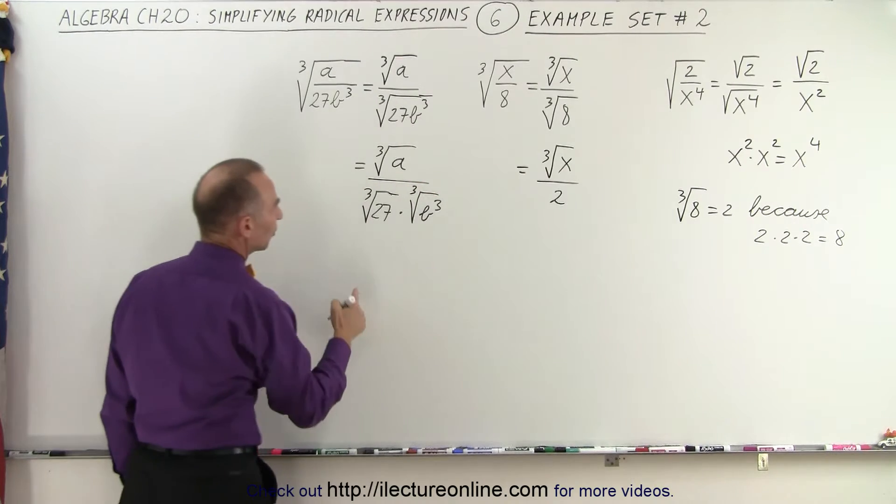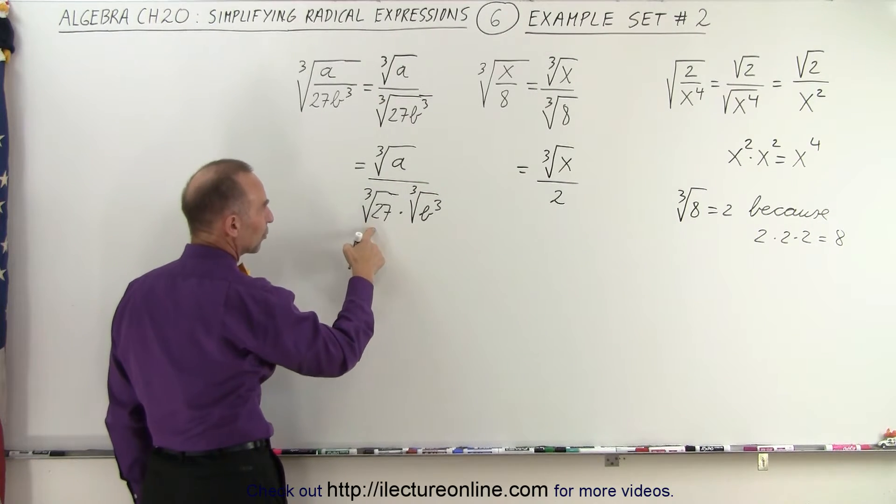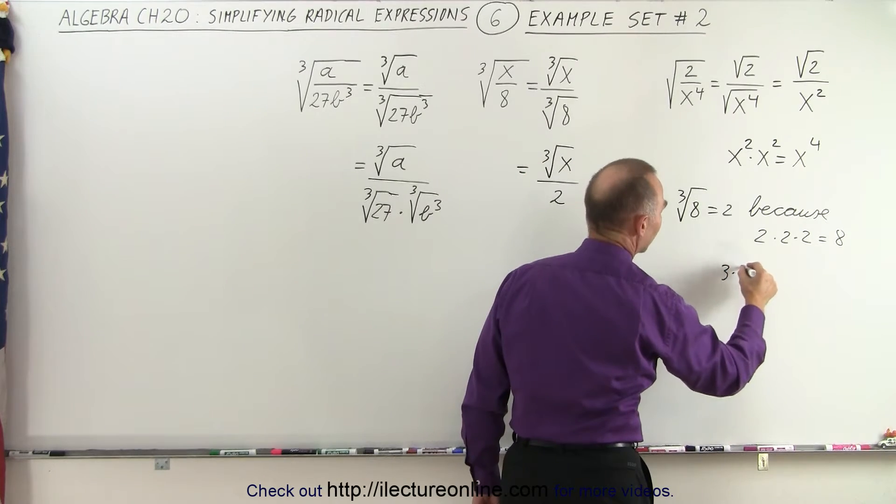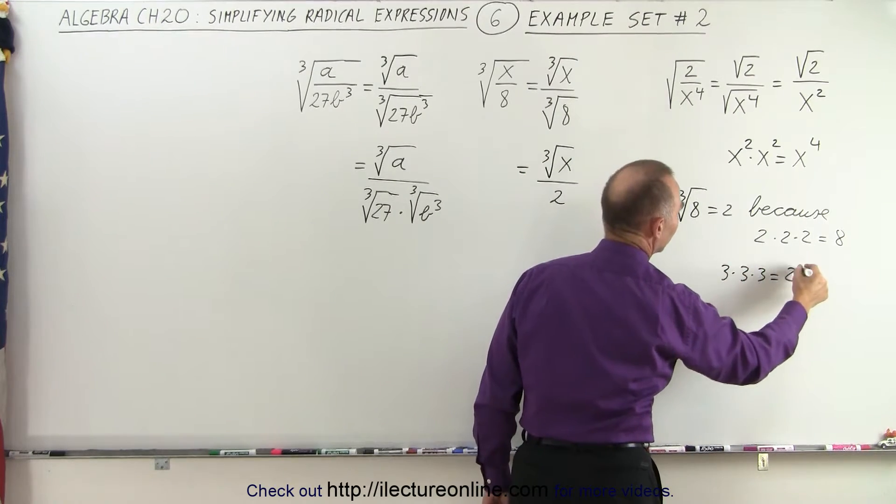And then you can see that the cube root of 27 is 3, for the same reason, because 3 times 3 times 3 equals 27.